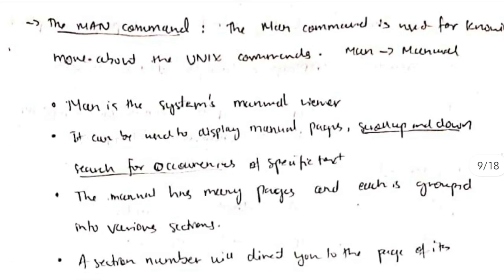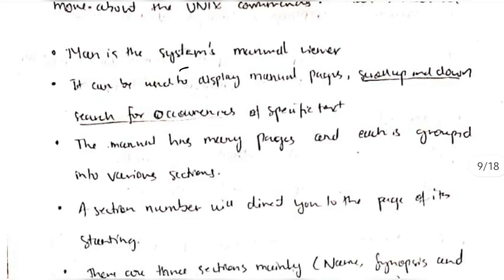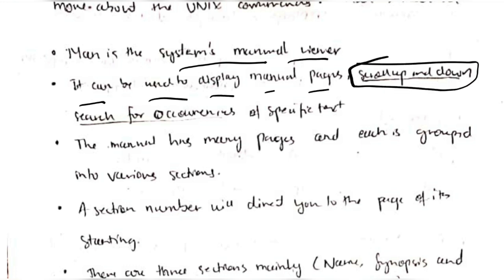The man command is very important from exam papers — it is asked a lot. The man command is nothing but the manual. If you want to see how commands work and what their functions are, you can use the man command — 'man' is short form of manual. Man is the system's manual viewer. It can be used to display manual pages, scroll up and down, search for occurrences, and many other functions.